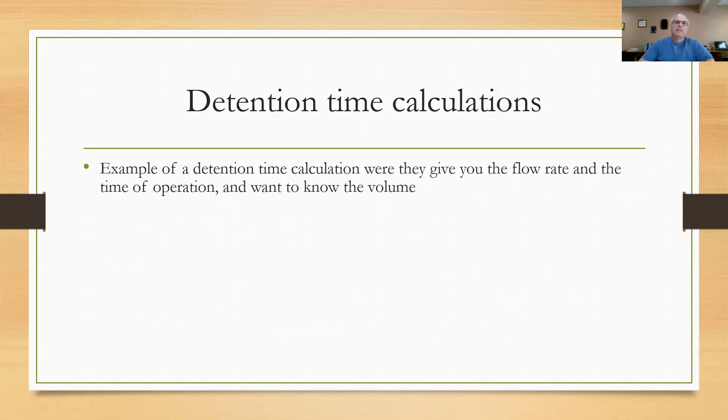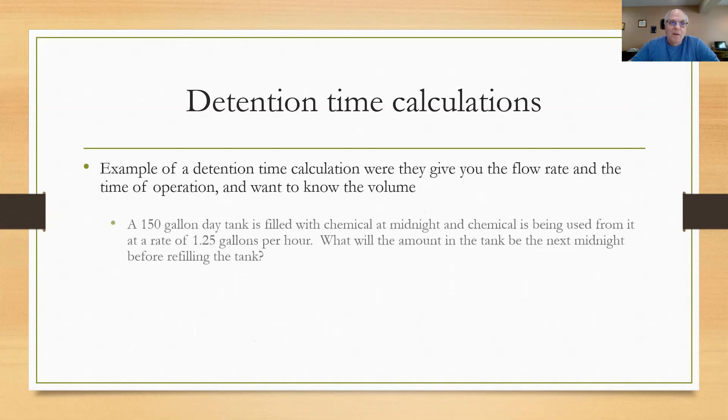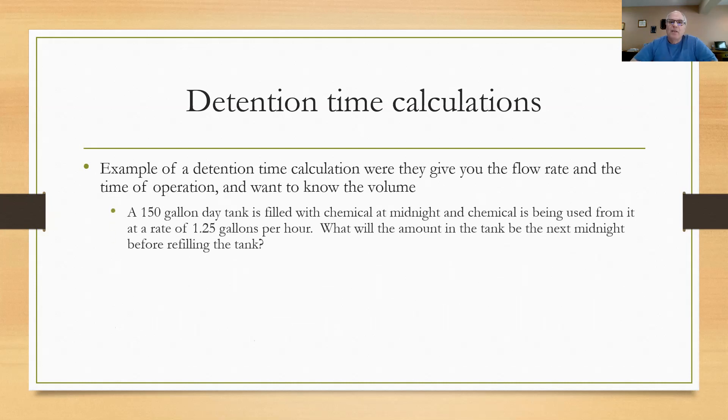Here's another detention time calculation where they're giving you the flow rate and the time of operation, the detention time. They want to know the original volume of the tank. So they tell you that we got a 150 gallon day tank. You filled it with chemical at your midnight rounds and you're using chemical out of that tank all night and all day at a rate of 1.25 gallons per hour. What's the amount in the tank going to be the next midnight when you go there to fill it back up? How much do you expect to find? Well, they've given us a time interval of 24 hours, midnight to midnight. Told us that the flow rate is 1.25 gallons per hour.